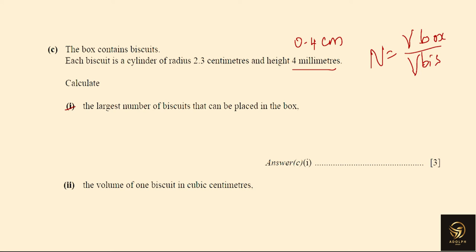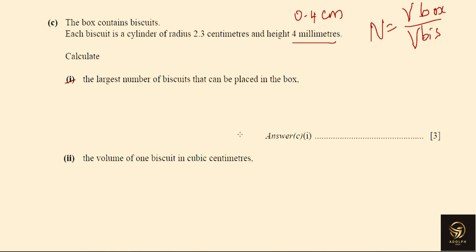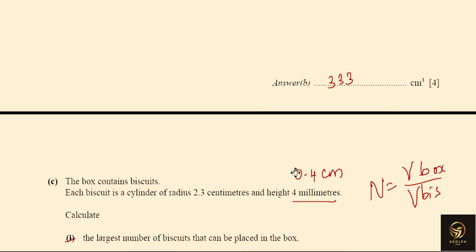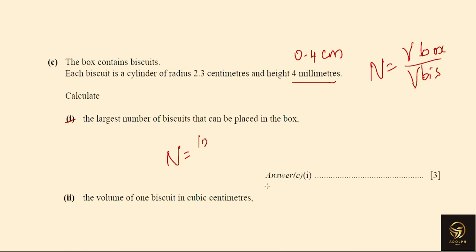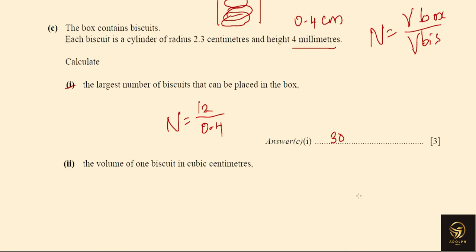The biscuits will be arranged stacking upright. The total height of the box is 12 cm and each biscuit is 0.4 cm tall, so n = total height ÷ biscuit height = 12 ÷ 0.4 = 30. We can place only 30 biscuits in the box. You cannot arrange them sideways or in any other orientation — only stacking them gives the correct arrangement.